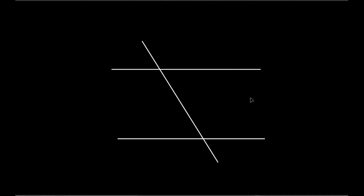Just looking at these two lines, can we say 100% that they're parallel? No, we can't. But what if I said this angle was 50 degrees and this angle was 50 degrees? I did not tell you those lines are parallel. But these are corresponding angles - they tell you the two corresponding angles are equal to each other. What happens to those two lines cut by the transversal? They must be parallel. Do you see how we're switching the if and the then?